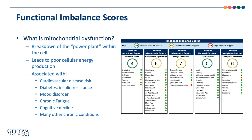Mitochondrial dysfunction is the second pillar. The mitochondria serve as the power plant within the cell, responsible for generating cellular energy in the form of ATP. When there is mitochondrial dysfunction, this leads to poor cellular energy production. Clinical associations include cardiovascular disease risk, diabetes, insulin resistance, metabolic dysfunction, mood disorder, chronic fatigue, cognitive decline, and many other conditions.